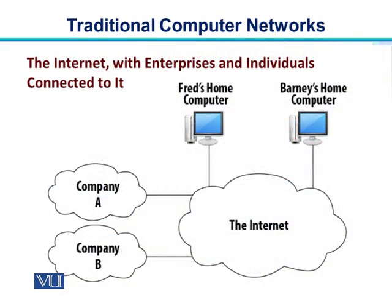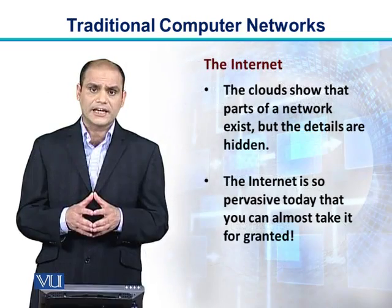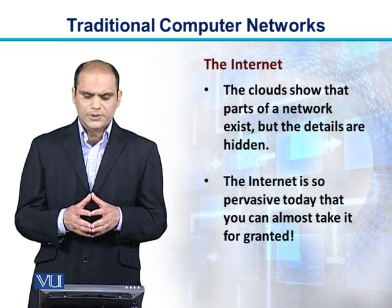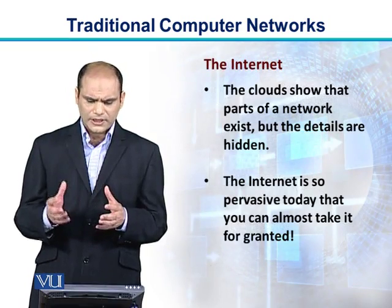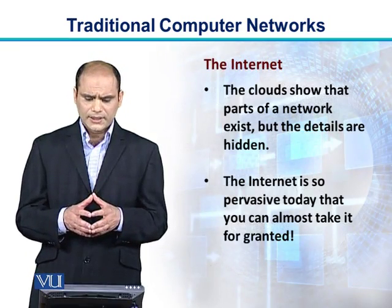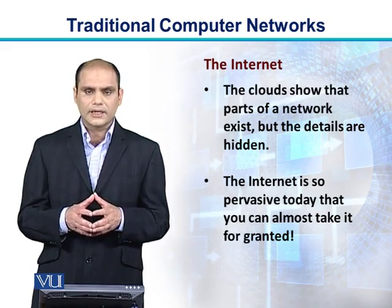This diagram depicts a couple of companies — Company A and Company B — which are different enterprises. We have also shown two individuals: Fred's home computer and Barney's home computer, and all of them can communicate over the internet. The cloud shown in the diagram represents parts of a network that exist but whose details are hidden — we are not interested in those details at the moment. The internet is so pervasive today that you can almost take it for granted.